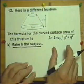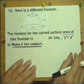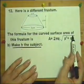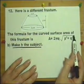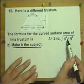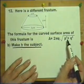As with all rearrangements of formulas, there's more than one way of starting. To get rid of a square root sign, you need to square.